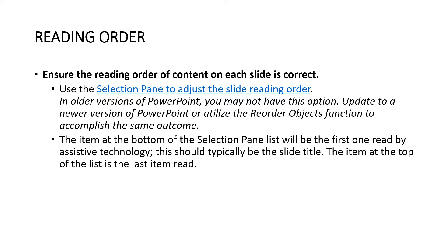In older versions of PowerPoint you may not have this option — update to a newer version or use the reorder objects function. You can search Google for reordering PowerPoint for your specific version, and a file or YouTube video will usually guide you. The item at the bottom of the selection pane list will be the first one read by assistive technology — this should typically be the slide title. The item at the top of the list is the last item read, so the ordering is counterintuitive but that's how PowerPoint works.